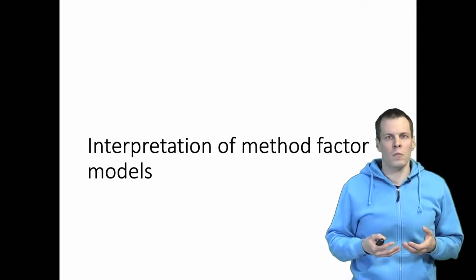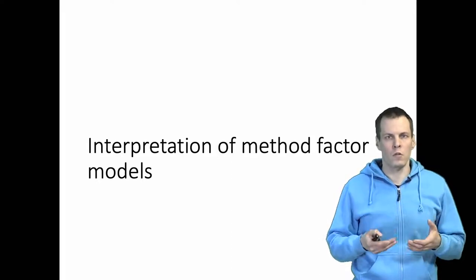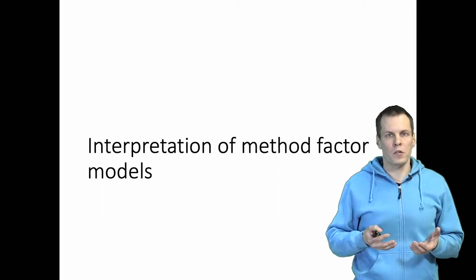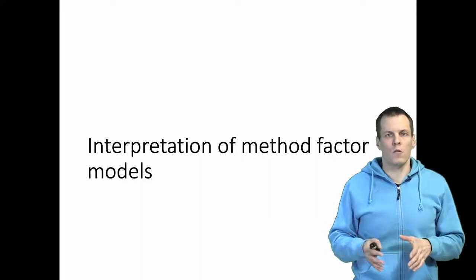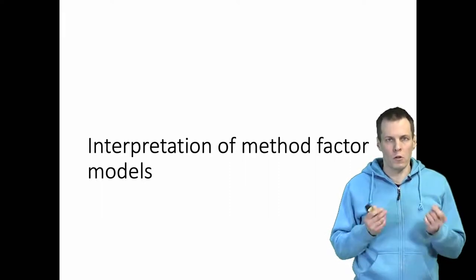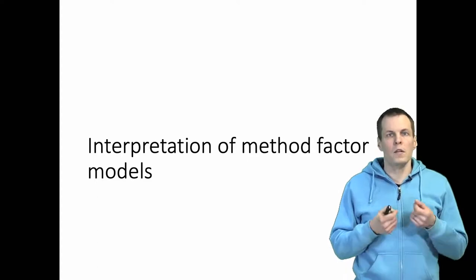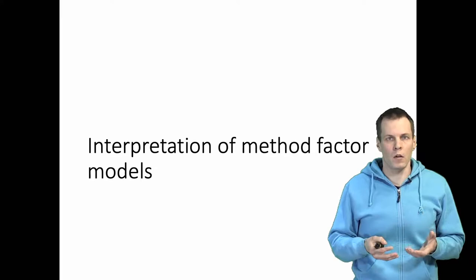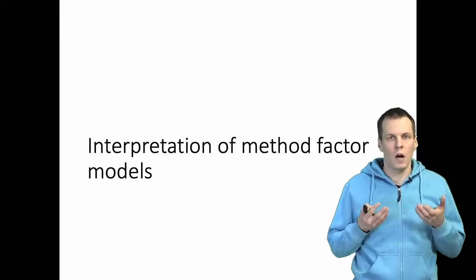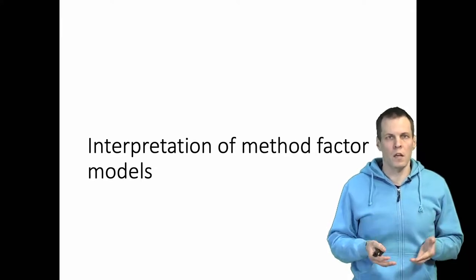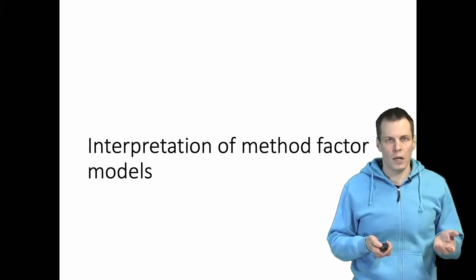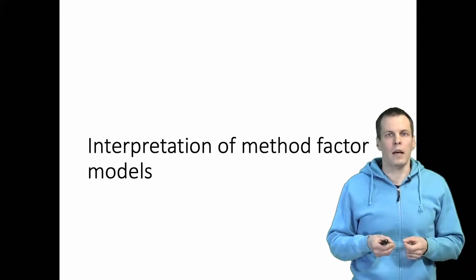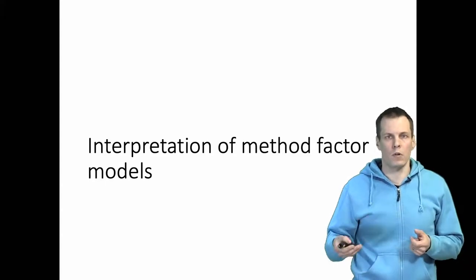After you have constructed a model that appropriately includes different sources of method variation, you have markers or some direct measures of those sources of method bias, and you have established that the model is identified and have estimated the model, then the final question is how should the modeling results from your method variance model be interpreted. In this video I'll take a look at common practice that is a bit bad and how these model results should be interpreted.